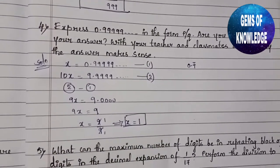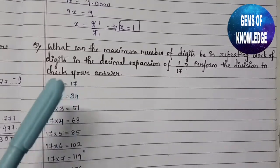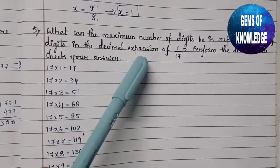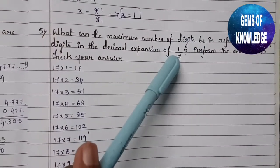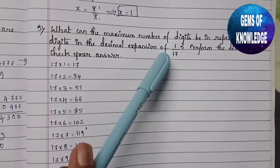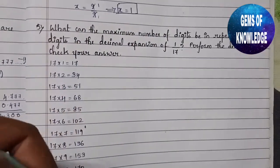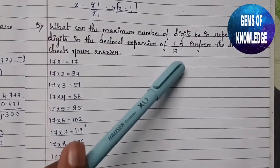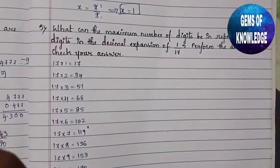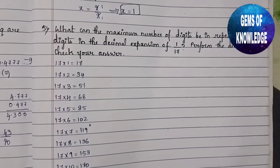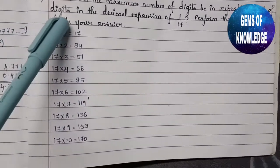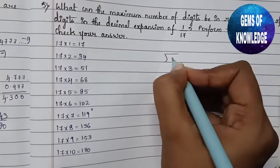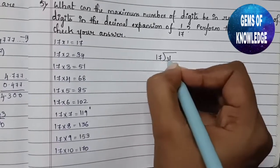That was the fourth question answer. Now let's move on to the fifth one. The question is: what can the maximum number of digits be in the repeating block of digits in the decimal expansion of 1/17? We have to find the decimal expansion of 1/17 and check the maximum number of digits. They say to perform the division to check the answer. I have written a table of 17's multiples here for easy reference, so let us start dividing.